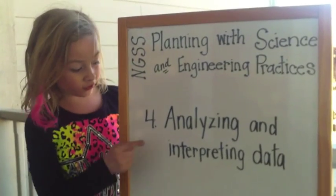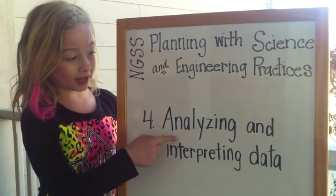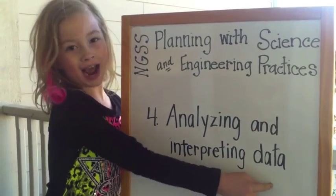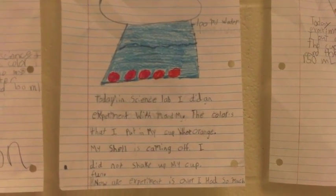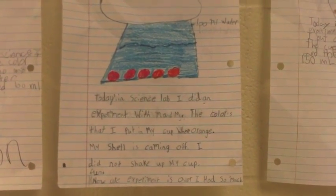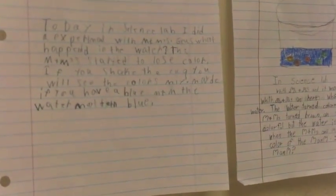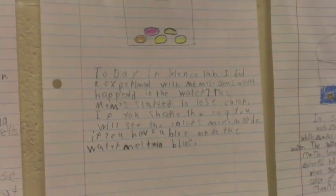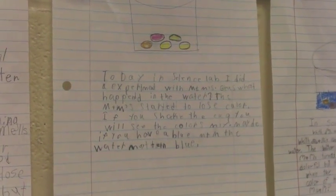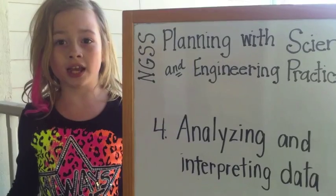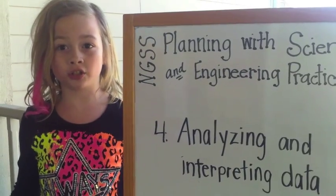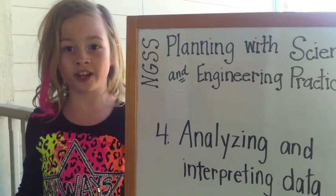Practice 4 is analyzing and interpreting data. Once data is collected, it must be presented in a way that can reveal patterns and relationships — through math, drawings, writings, and drawing pictures of observations.